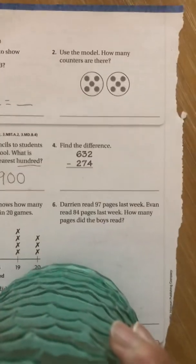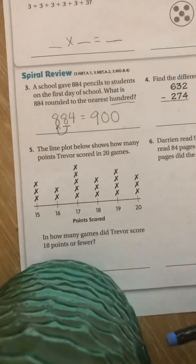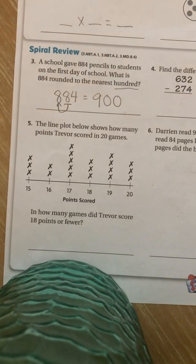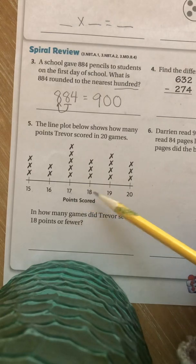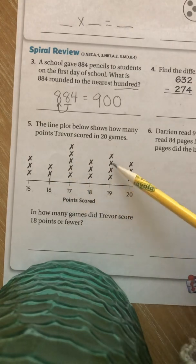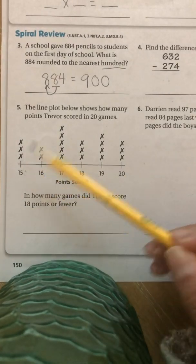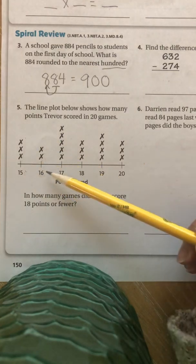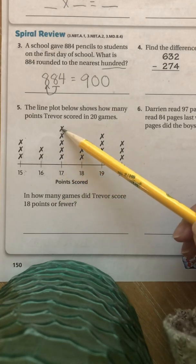Number four I'm not doing — you just have to subtract. It says find the difference, so just subtract. I am going to do number five because number five we have not talked about. It's showing a line plot, and we haven't talked about line plots, so I need to talk to you about this. It says the line plot below shows how many points Trevor scored in 20 games. Here's 15, 16, 17, 18, 19, 20, and it shows how many points. The X's show how many points he scored in those games.